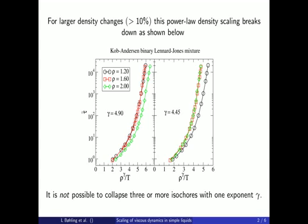Simulating three isochores with densities 1.2, 1.6 and 2.0 and plotting the relaxation time against the density scaling variable with two different choices of gamma, it is clear that one single gamma cannot collapse all the isochores.